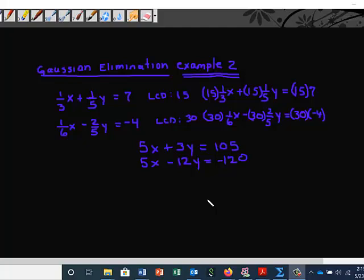What we want to do is clear the fractions so that life can be much easier. When solving the system, we want to clear the fractions so that we can have whole number coefficients in each of the terms. We have (1/3)x + (1/5)y = 7 and (1/6)x - (2/5)y = -4. Our LCD, which is the least common denominator in this case, is fifteen.